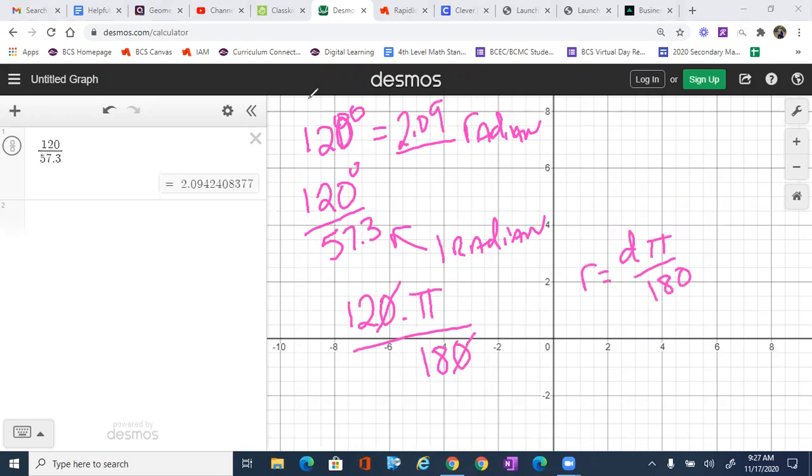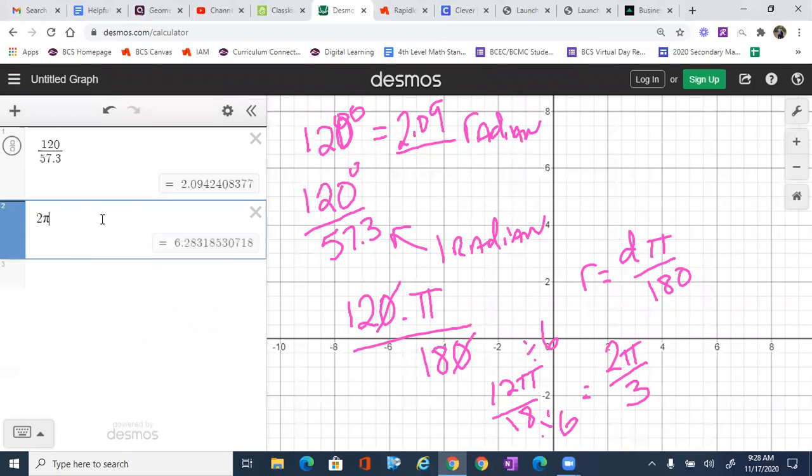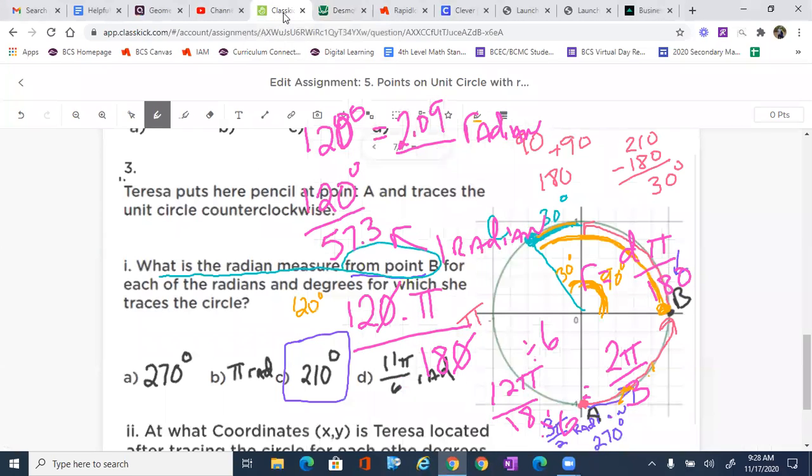We simplify, take off the zeros because we're dividing by 10. We get 12π over 18. We can divide by 6 to simplify this. And that's going to be 12 divided by 6, which is 2π over 3. Well, if I type in 2π over 3, 2π divided by 3, that also gives us 2.09. And then, of course, we can come back to our picture here.